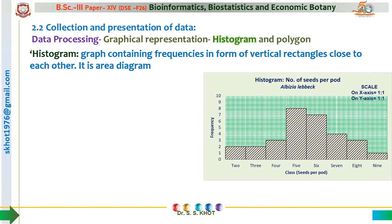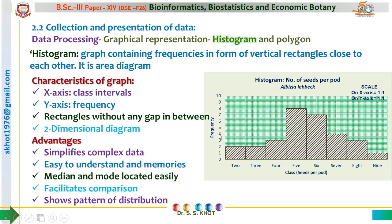A histogram is a graphical representation where frequencies are presented in vertical columns. Vertical rectangles are drawn for the frequency of each class, making it an area diagram. On the X axis there are class intervals — for example, seeds per pod in the plant Albizia lebbeck. The title of the graph represents the number of seeds per pod in that plant, and each class represents a different number of seeds per pod.